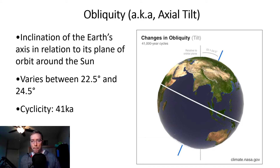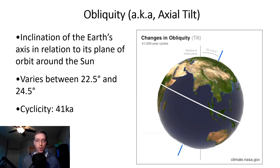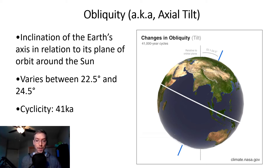As obliquity decreases, it gradually helps make our seasons milder, resulting in increasingly warmer winters and cooler summers that gradually over time allow snow and ice at the high latitudes to build up into large ice sheets. As ice cover increases, it reflects more of the sun's energy back, promoting even further cooling. It's kind of a positive feedback loop.